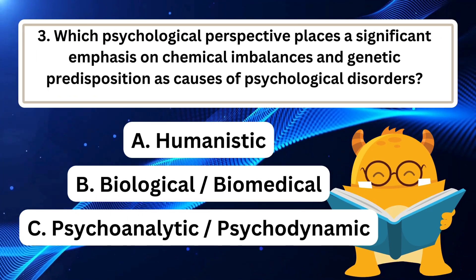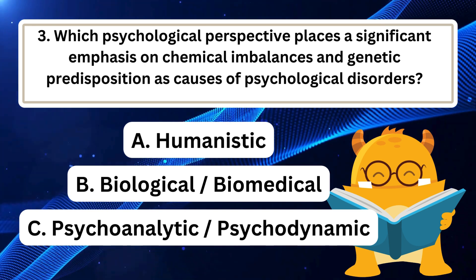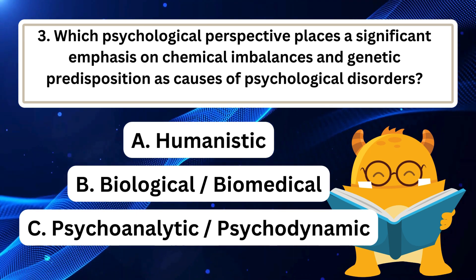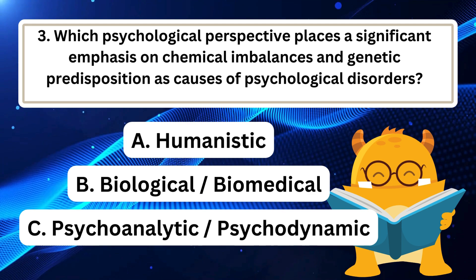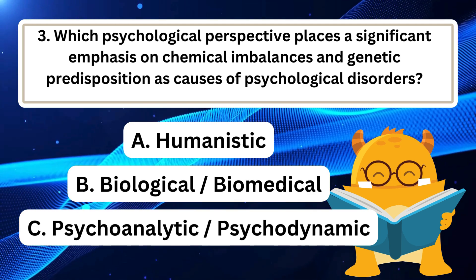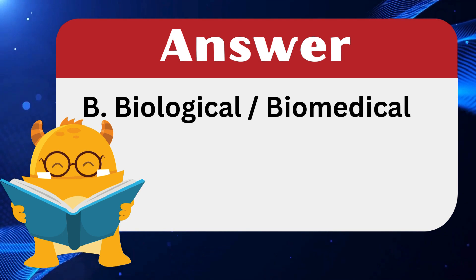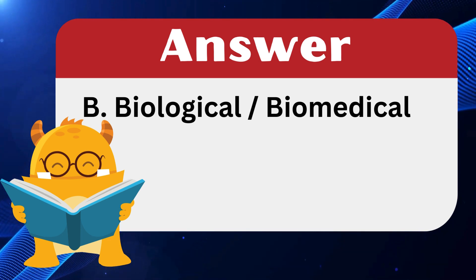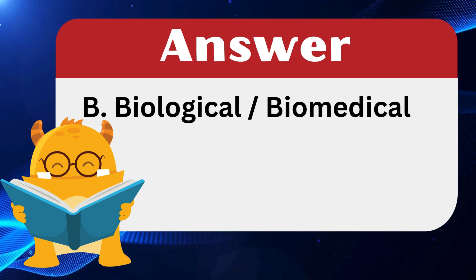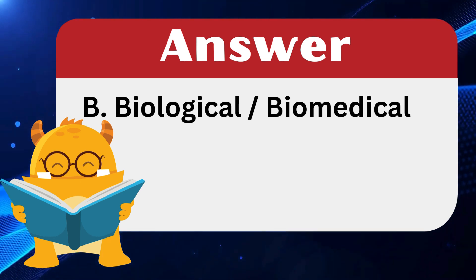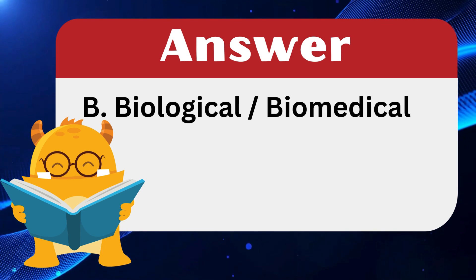Question 3: Which psychological perspective places a significant emphasis on chemical imbalances and genetic predisposition as causes of psychological disorders? The answer is B: Biological/Biomedical. The biological or biomedical perspective places substantial emphasis on the role of chemical and physical imbalances in neurotransmitters and genetic predispositions as underlying causes of psychological disorders. This perspective explores how biological factors such as genetics, brain chemistry, and physiology contribute to the development of mental health conditions.